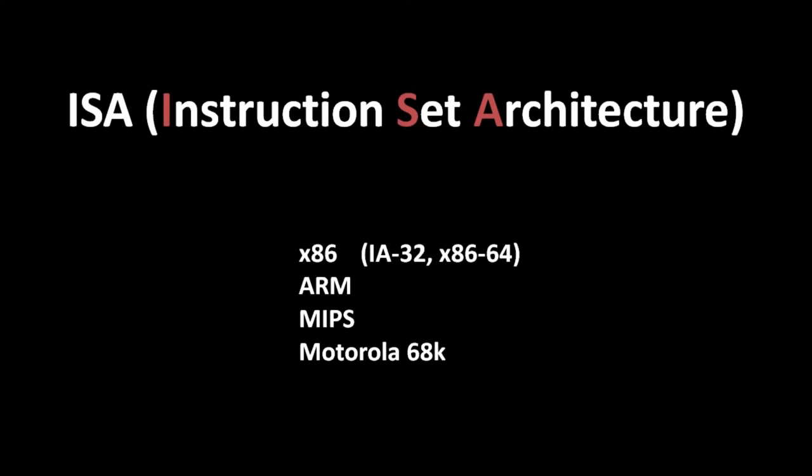A CPU's programming model primarily consists of its instruction set — the precise set of instructions which the CPU is hardwired to understand — and its set of registers, their number, their sizes, and their purposes. Together, these two facets of a CPU are often called its ISA, its instruction set architecture. If you have two processors which both support the same ISA, then they both can run the same code, even if the processors were made by different manufacturers.